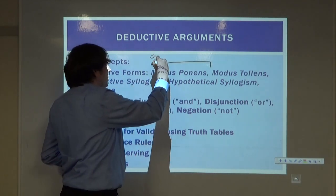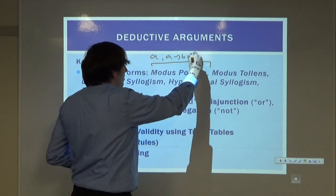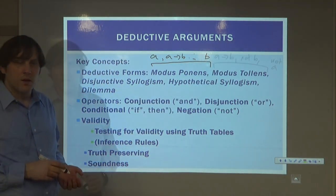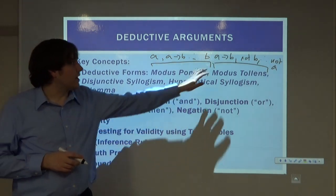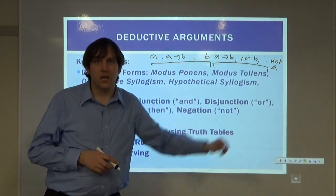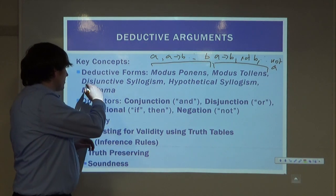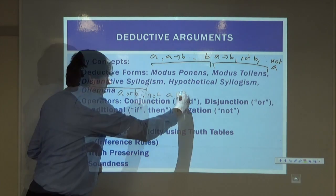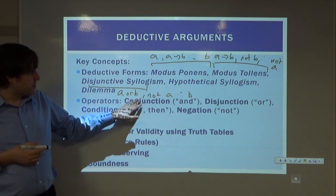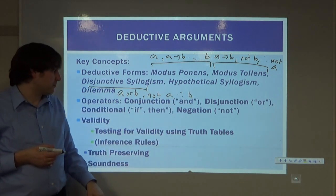For modus ponens, we have A, we have A implies B, and from this we are able to say B. For modus tollens, we have A implies B, we have not B, and then we can conclude not A. For disjunctive syllogism, we have A or B, we have not A, and from this we can imply B.